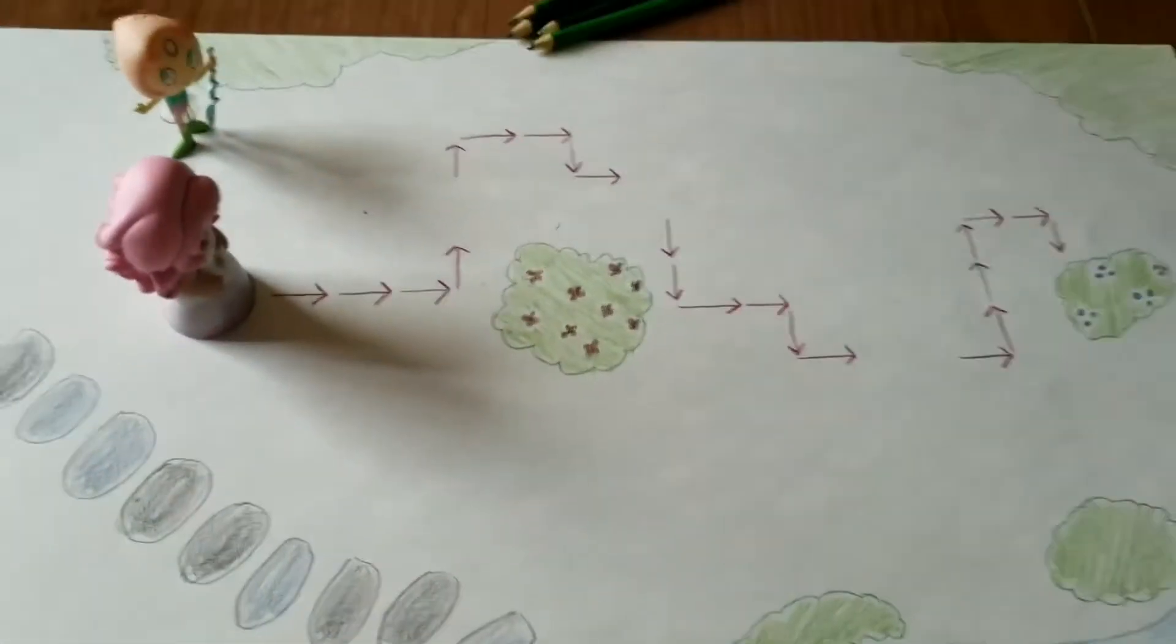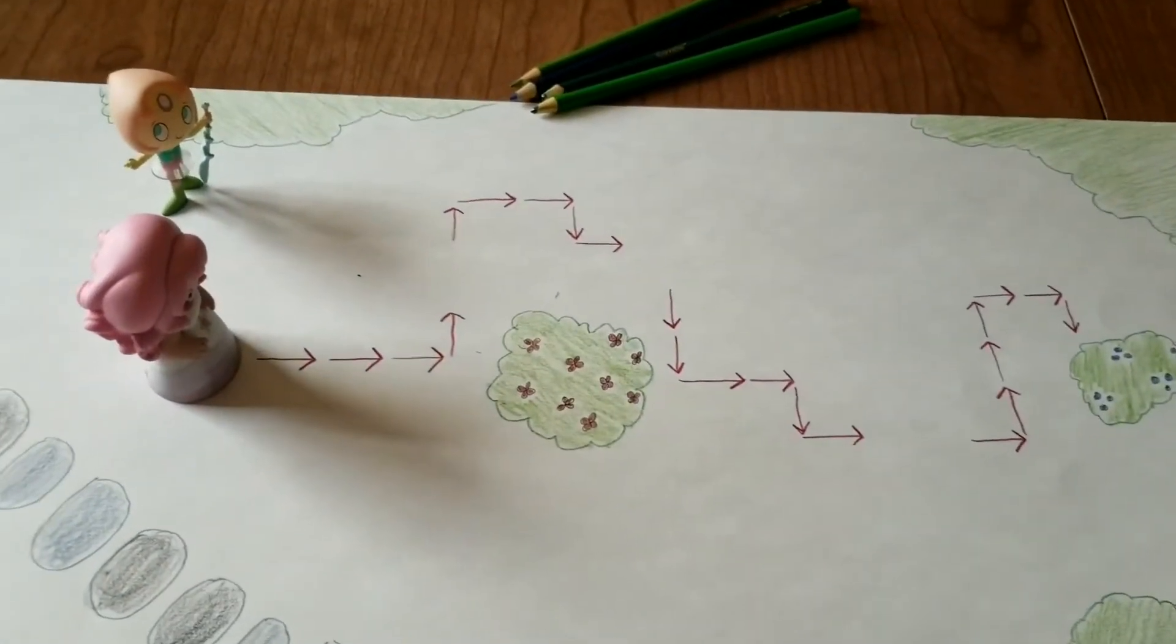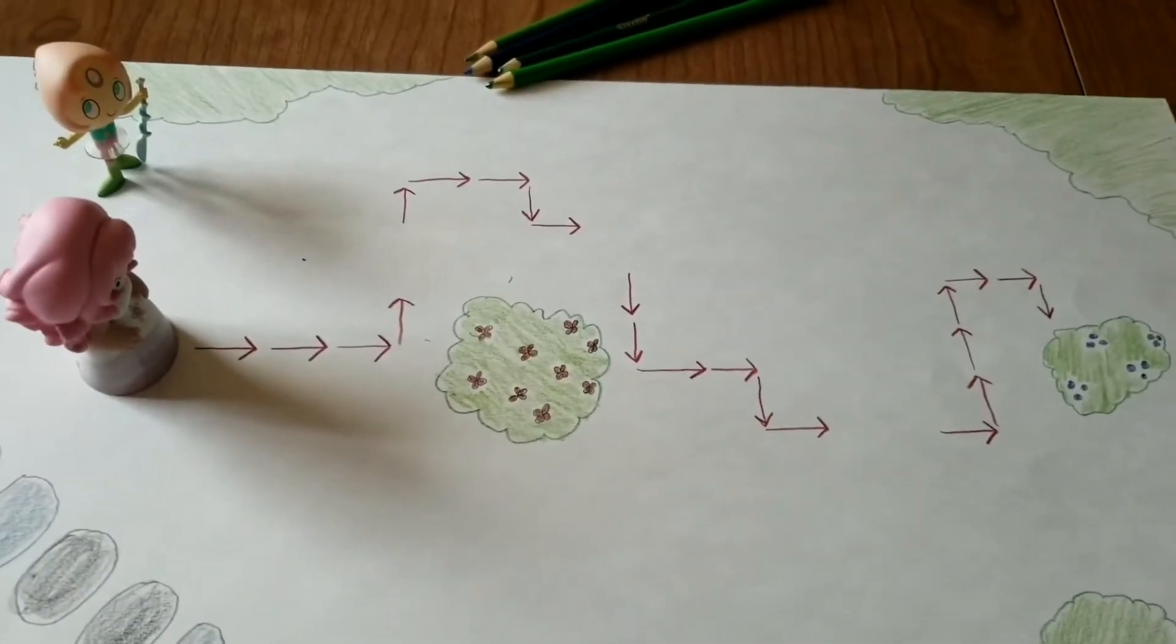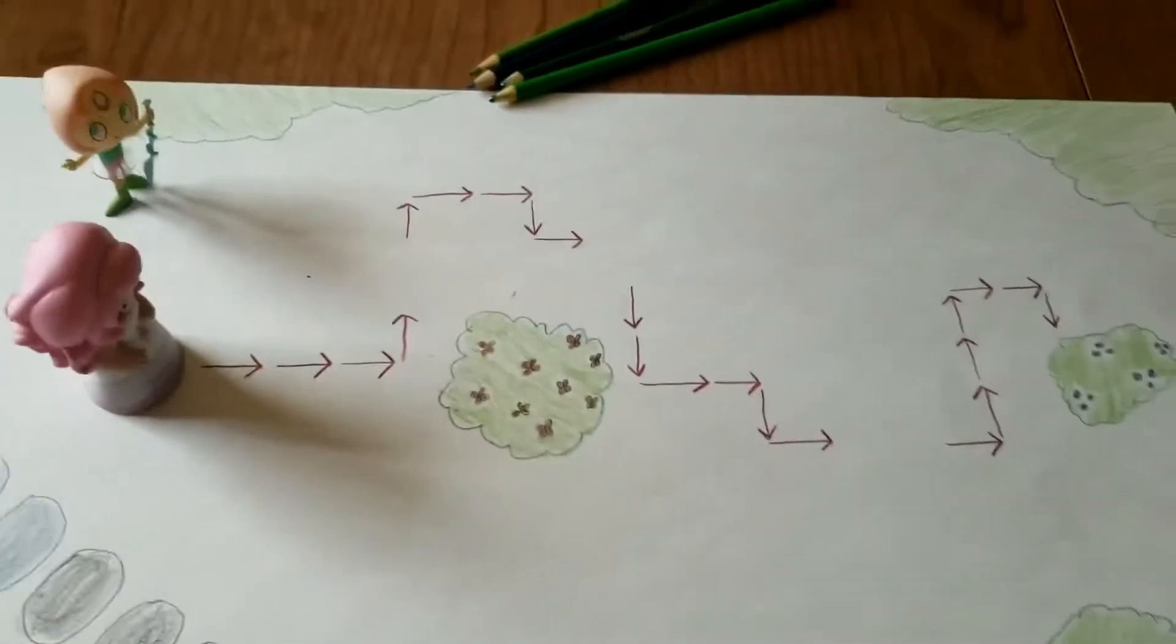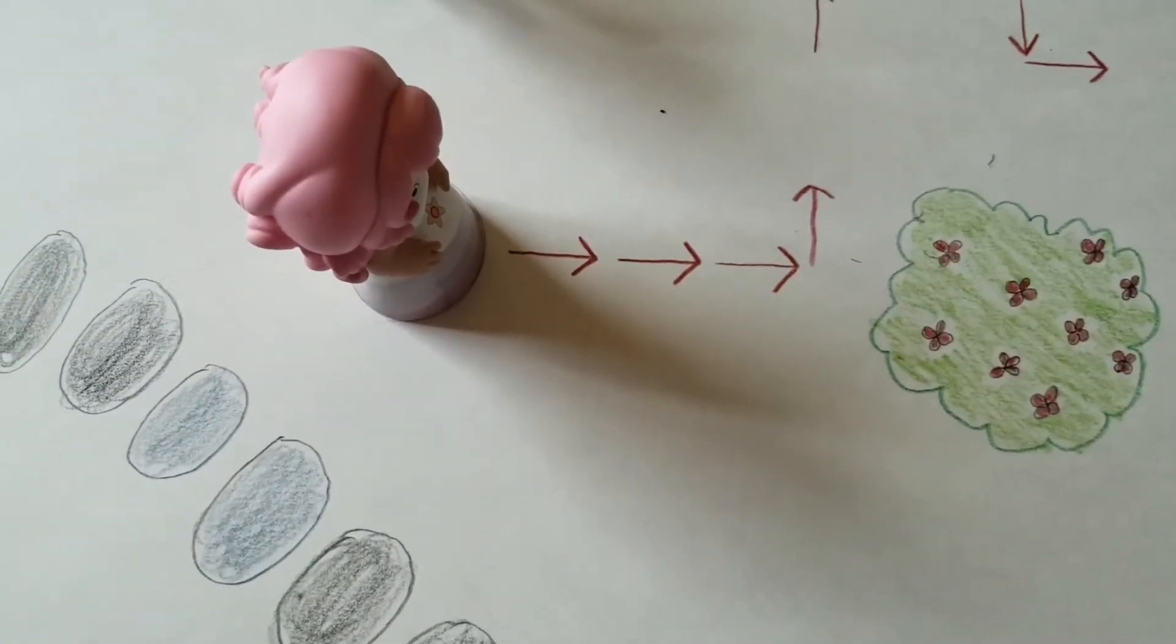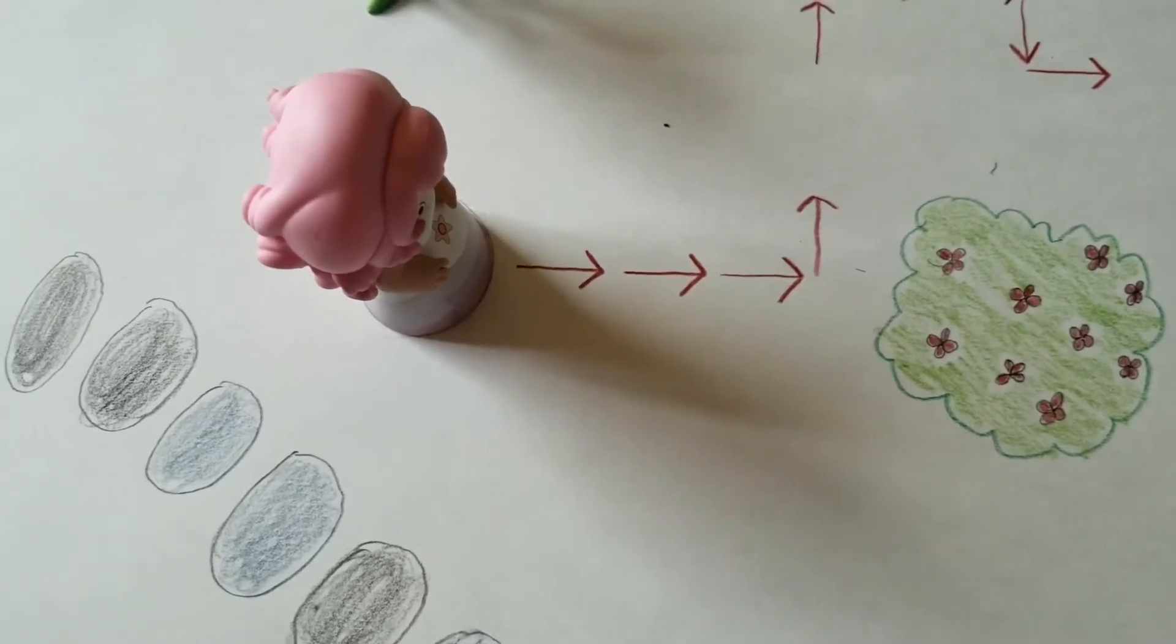Now these arrows are just imaginary. You won't write the arrows. These are the steps that Pearl will give Rose. So the first step of instructions are forward three spaces and then turn to the left and go forward one space.